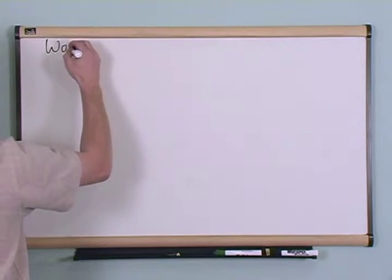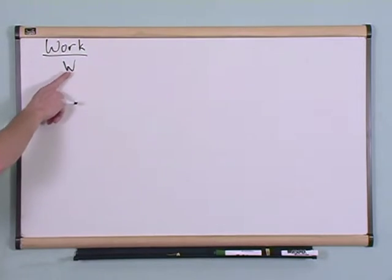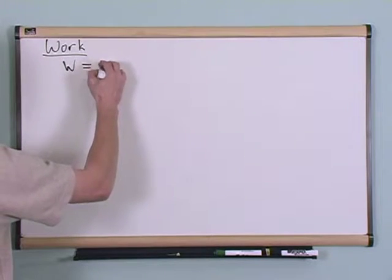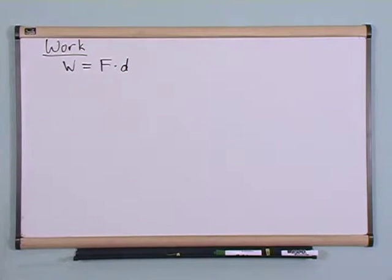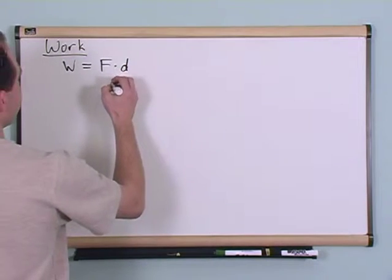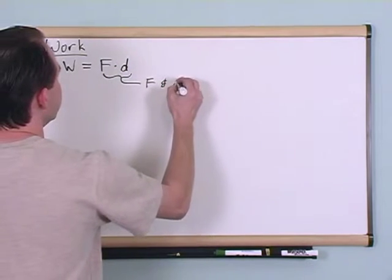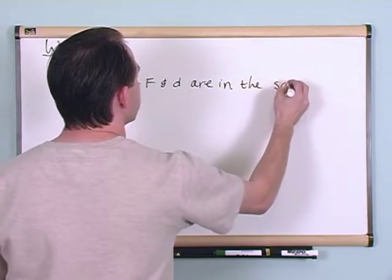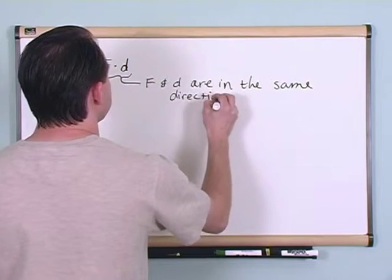What we're going to talk about in this section is the concept of work, so that's why I'm going to write that right there. Very simply, the work done on an object is equal to the force applied to the object times the distance traveled by the object, where F and d are in the same direction.